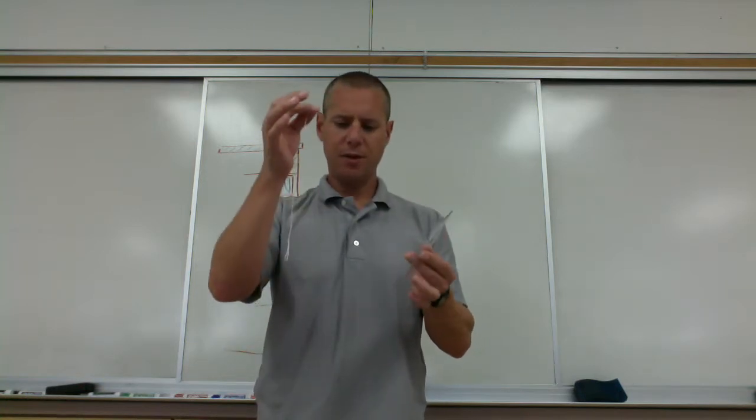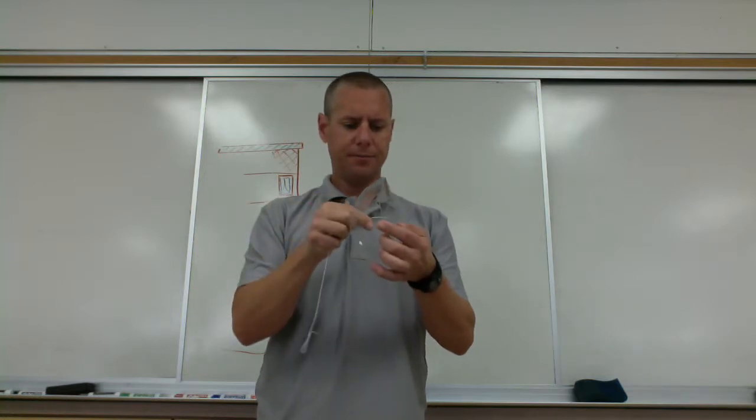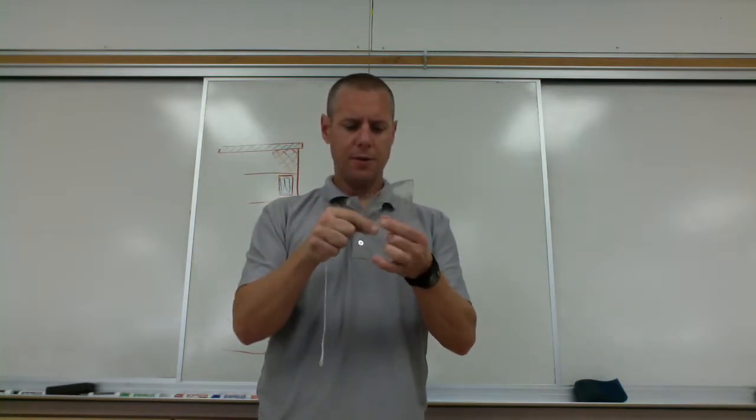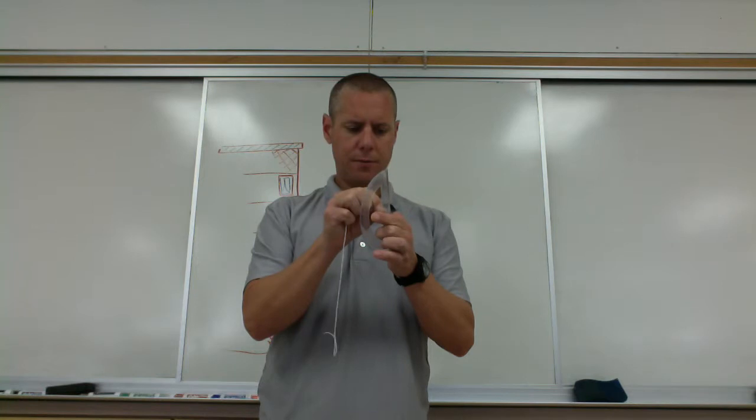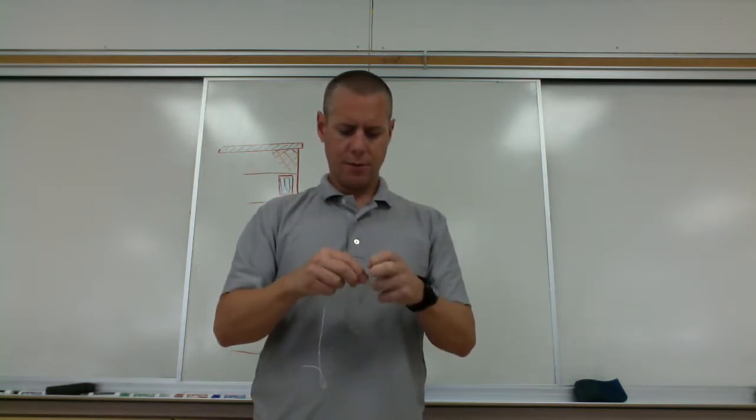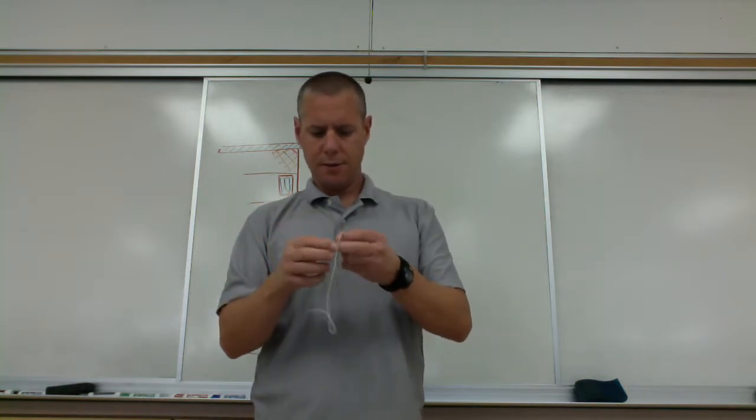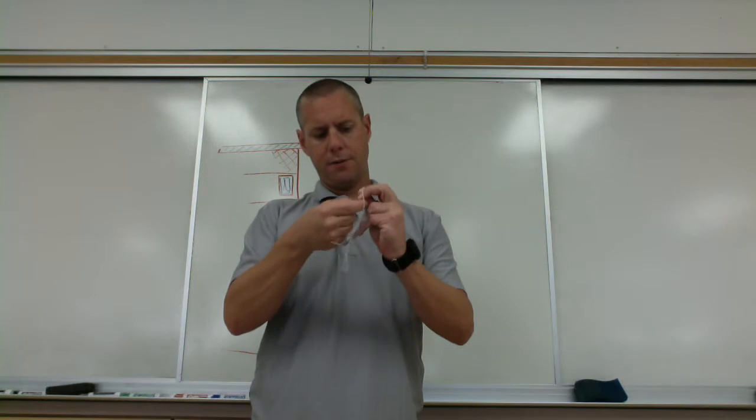Take a protractor, a small piece of string with a loop tied at the end. Put the string through the hole of the protractor and tie it with a granny knot.